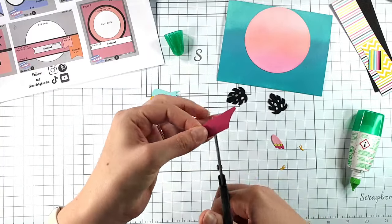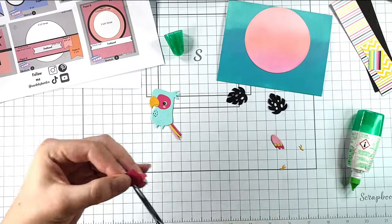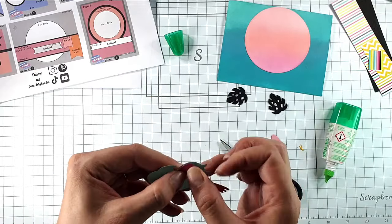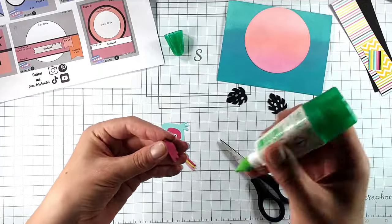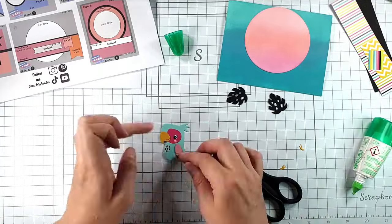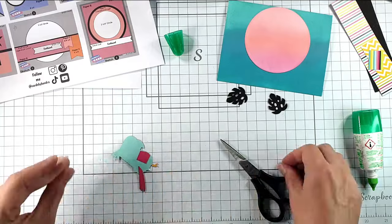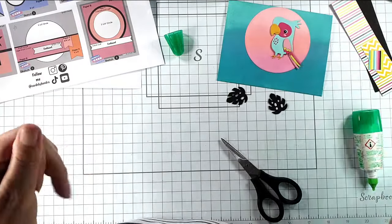So our little parrot's coming along nicely. I'm just going to cut a piece to go behind his tummy. And I can add his wing on his feet. There's that finished.